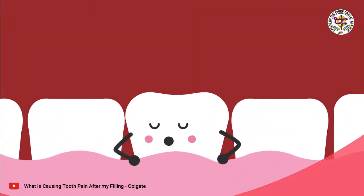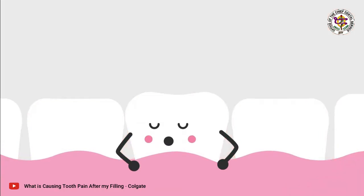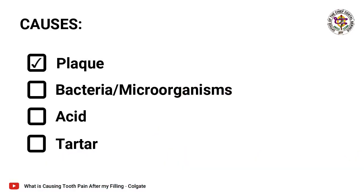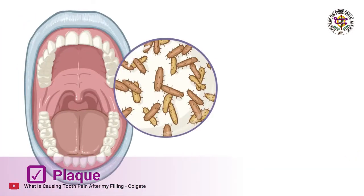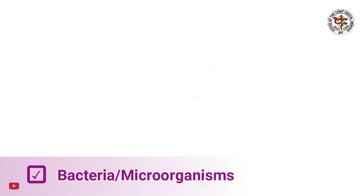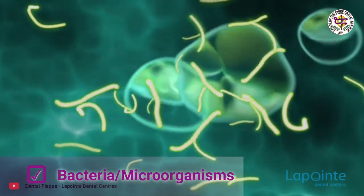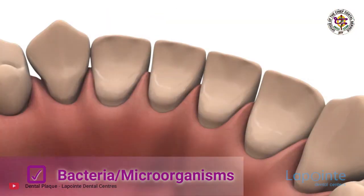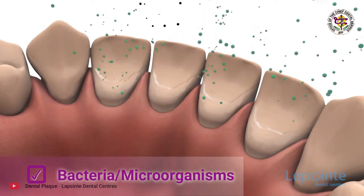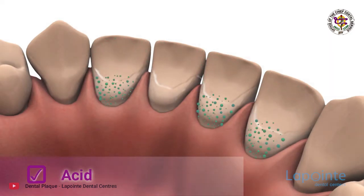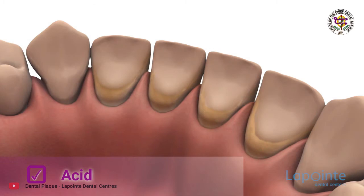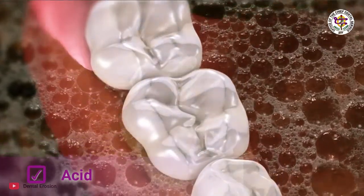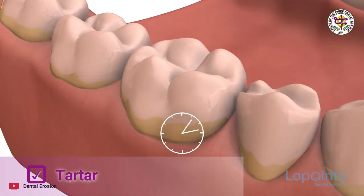Causes include plaque — a film or coating of germs that forms on teeth, mixes with food, and makes acid. Bacteria are tiny germs you can only see with a microscope that cause many infectious diseases. Acid is a strong liquid produced from certain foods left in the mouth, and it causes both tooth decay and gum disease.